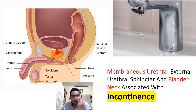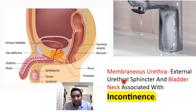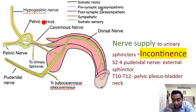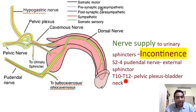In the male urethra, two components maintain continence: the external urethral sphincter and the bladder neck. In the female urethra there is only one — the external urethral sphincter. So in males, if either the membranous urethra or the bladder neck is ruptured, incontinence can result. Incontinence can be due to muscle injury or nerve injury. The external urethral sphincter is supplied by the pudendal nerve from S2–S4; the bladder neck is supplied by T10–T12.